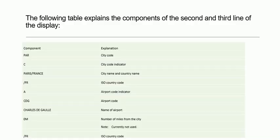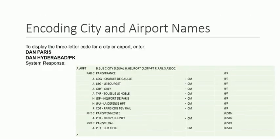In the table: PAR is the city code, C is the city code indicator, Paris/France is the city name and country name, /FR is the ISO country code, A is the airport code indicator, CDG is the airport code, Charles de Gaulle is the name of the airport, zero meters is the number of miles from the city (currently not used), and /FR is the ISO country code. Now you can easily understand what the display is telling you and what it is providing.